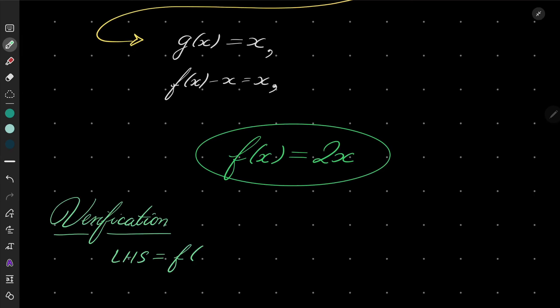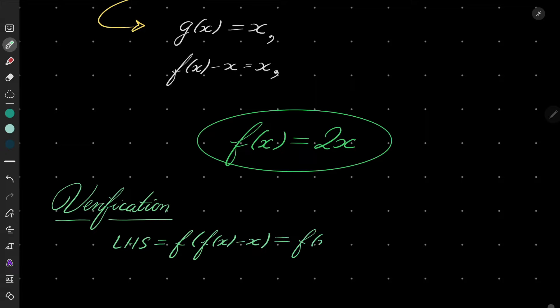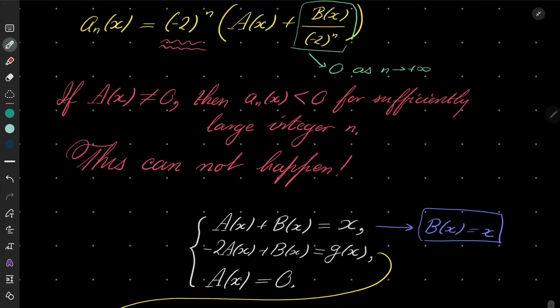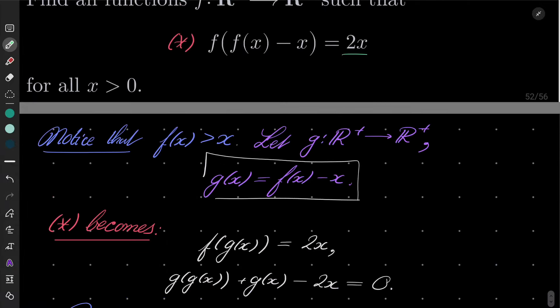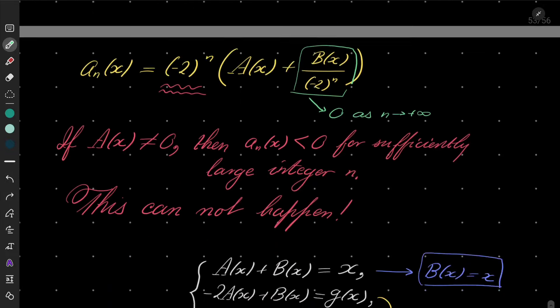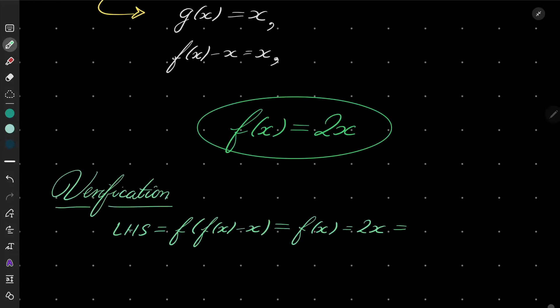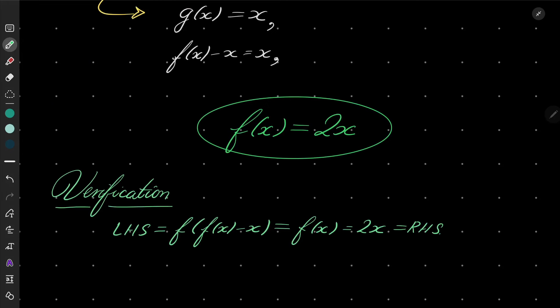Let's take our very first functional equation and compare left-hand side and right-hand side. On the left-hand side we had f(f(x) - x), which is f(2x - x) = f(x) = 2x. And what do we have on the right-hand side? Oh, would you look at that, 2x. Very well.